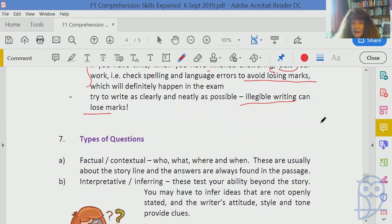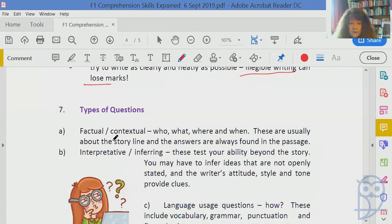The last thing to look at are the types of questions you can get in a comprehension. First, factual or contextual questions - who, what, where, and when. These are usually about the storyline and the answers are always found in the passage. Then you get interpretive or inference type questions. These test your ability to think outside the box. You may have to infer an idea because it's not openly stated in the passage. This is about the writer's attitude, style, and tone where he has provided clues but you have to pick them up.